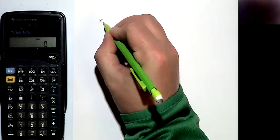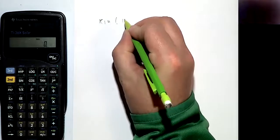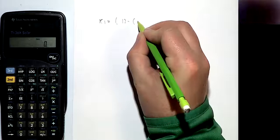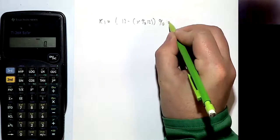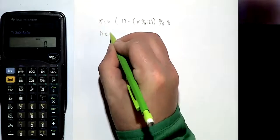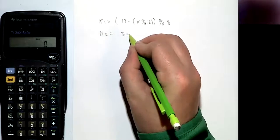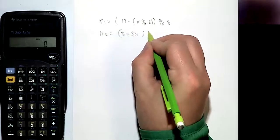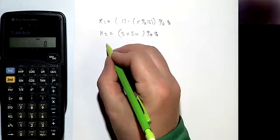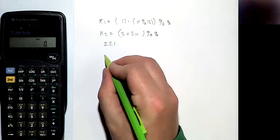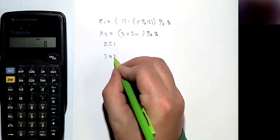So we have k1 is equal to 13 minus x mod 13, and that's going to be mod 8, and k2 is going to be equal to 3 plus 5x mod 8. So the two values we're putting in are 221 and 383.